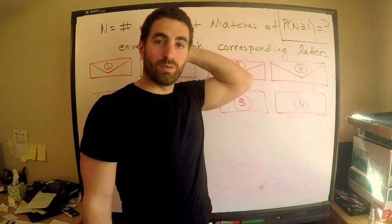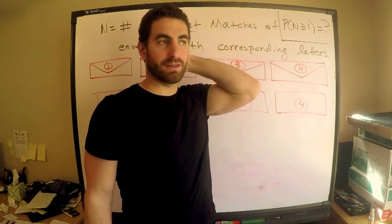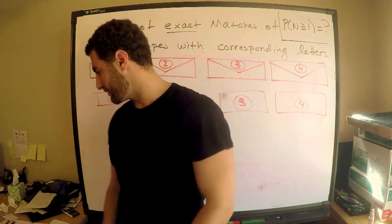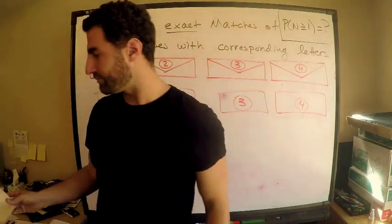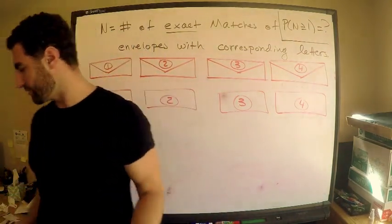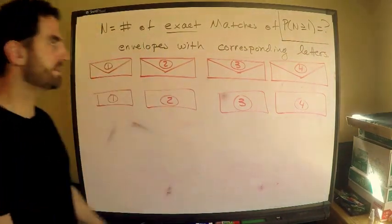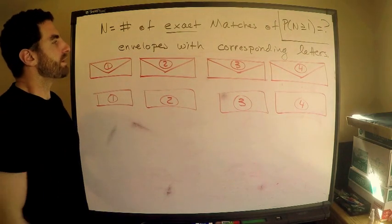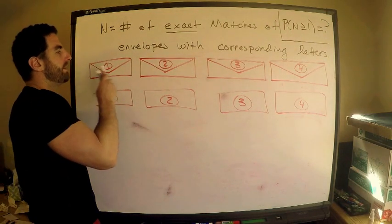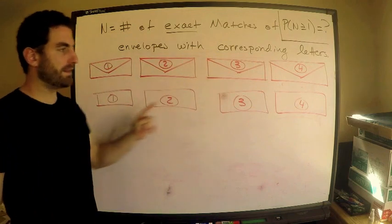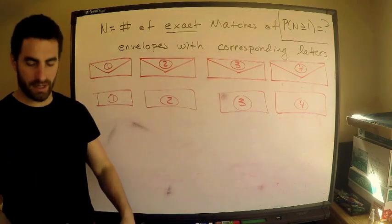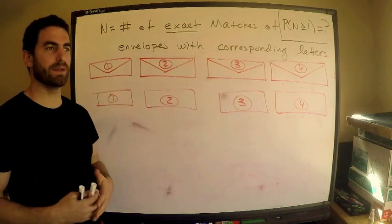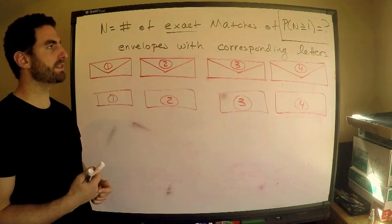We're interested in the probability that there's at least one match — P(N ≥ 1). So here are my envelopes and here are my letters, and they need to go somewhere as I randomly place them.